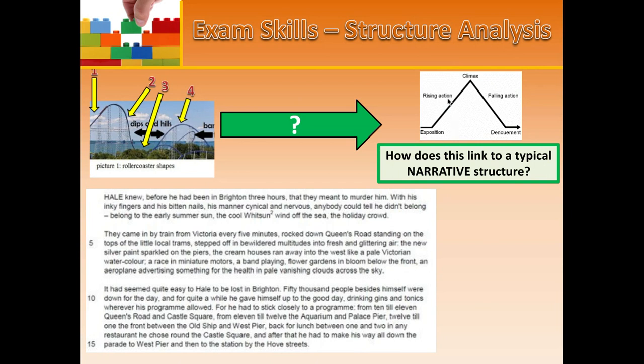As we continue up into the rising action, this is where things start happening — the protagonist might go somewhere new or experience a problem. The rising action suggests things are picking up pace, potentially going wrong or getting exciting, up until the climax. The climax is the crisis point — the moment when the action hits its highest point, where there is no going back. The situation develops up until this peak.